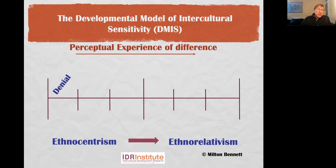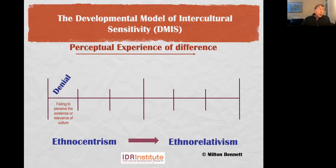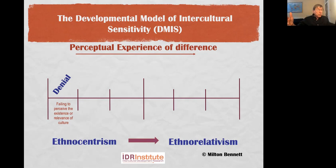Let me briefly describe the stages. The denial stage, which is the default condition — the place where all of us start — is failing to perceive the existence or relevance of culture. These people basically have no categories or only vague categories for otherness. They know there are other people out there, but they don't have much contact with them and as a result just don't think about it. It's important to realize that most people are not against other cultures; they just don't think about other people.